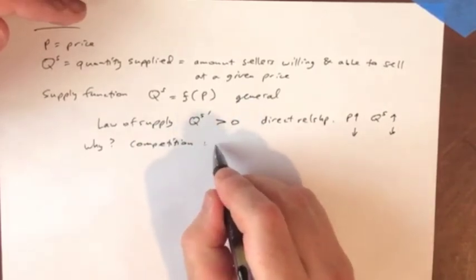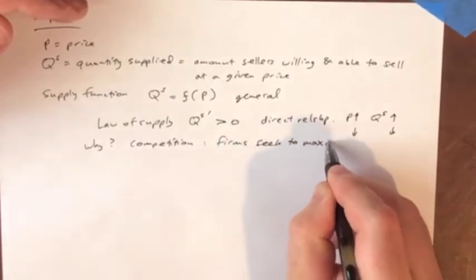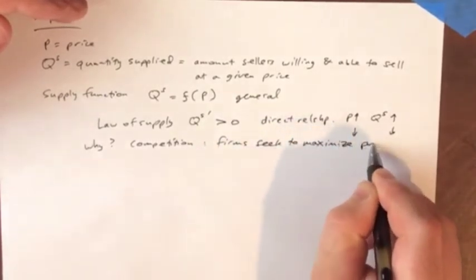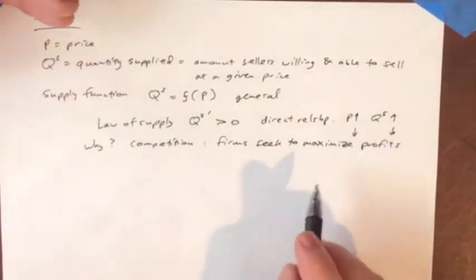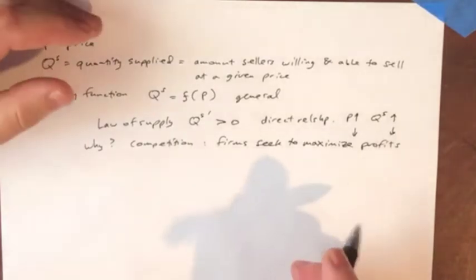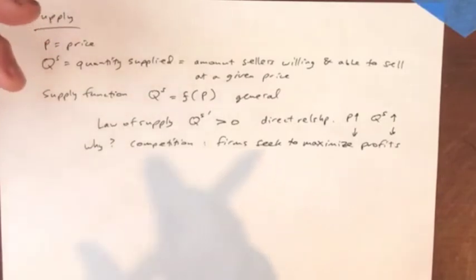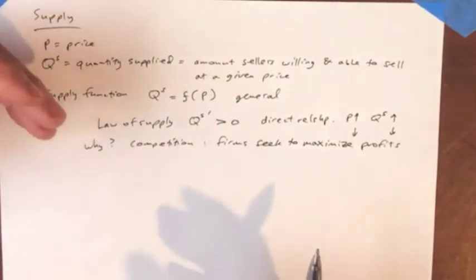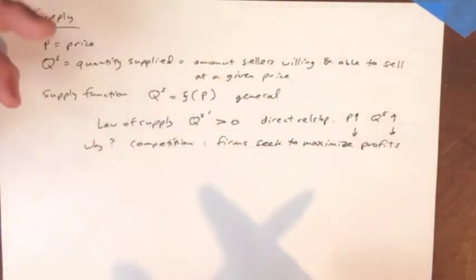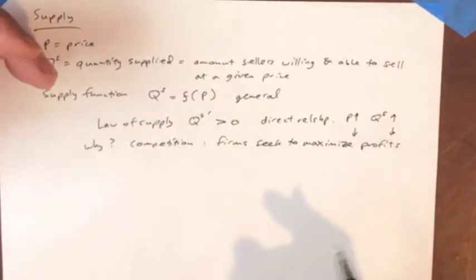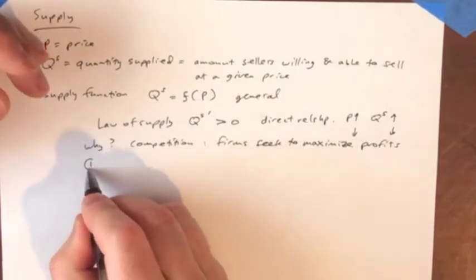Marshall basically put this all down to competition and an assumption about firms. We assume that all firms seek to maximize their profits. In other words, if a firm could do something different which would result in a higher profit, they would do that. If they're given a choice between two different markets with the same amount of risk and cost, but one has higher profit than the other, they're going to choose that market. That's the assumption here.